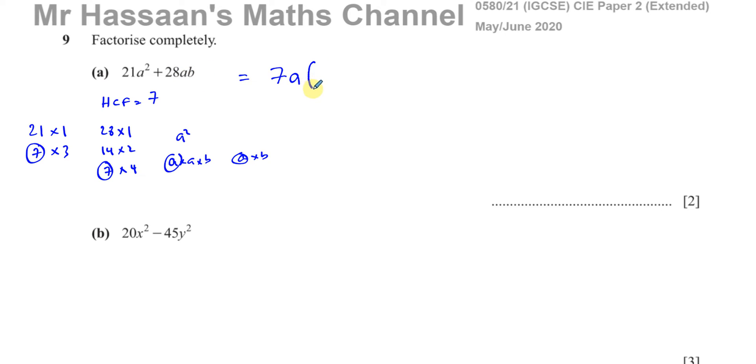So now we open our bracket. We say, what do I have to multiply 7a by to get 21a²? Well, 7 has to be multiplied by 3, and a has to be multiplied by a. That's going to give me 21a².